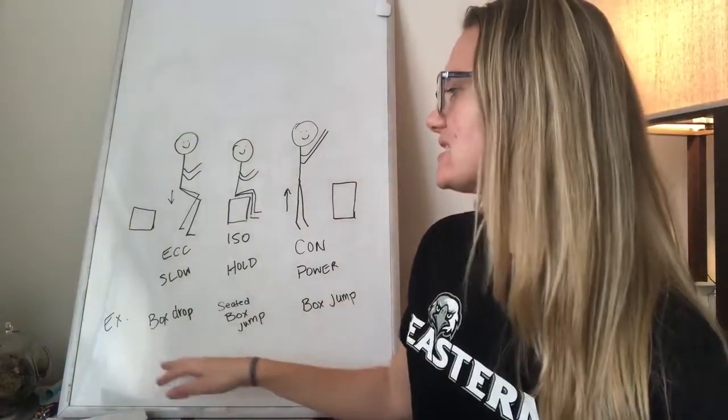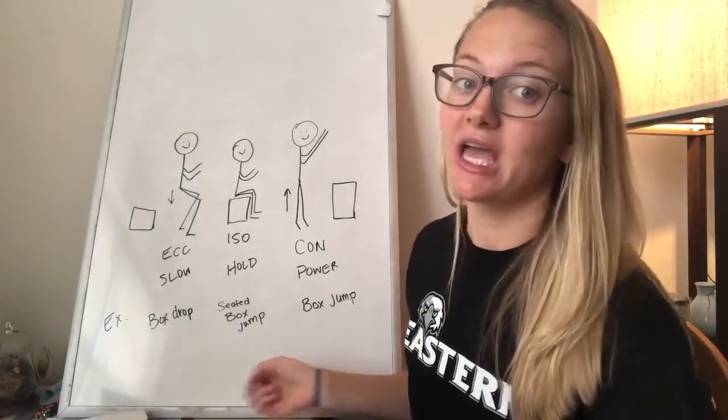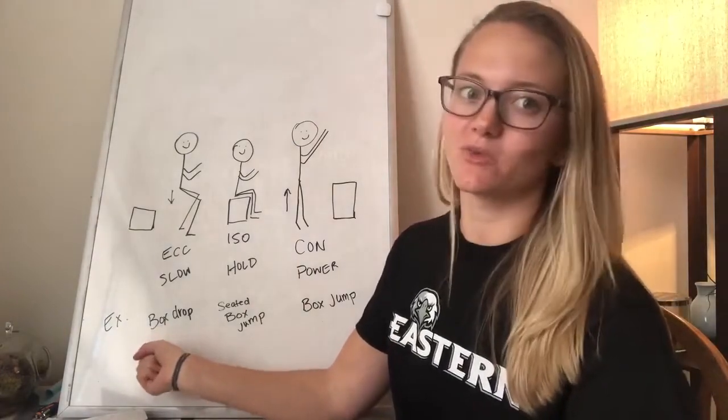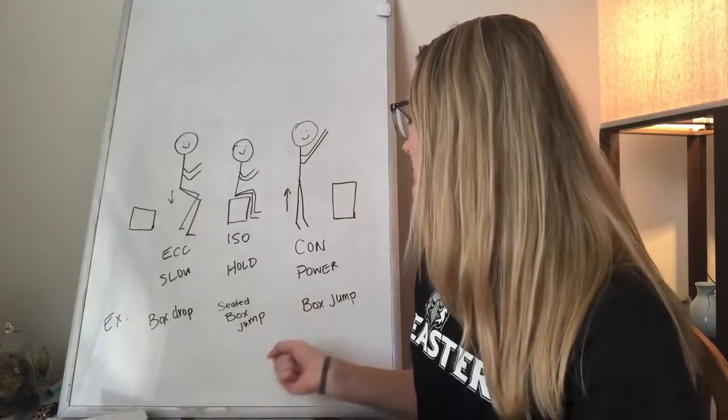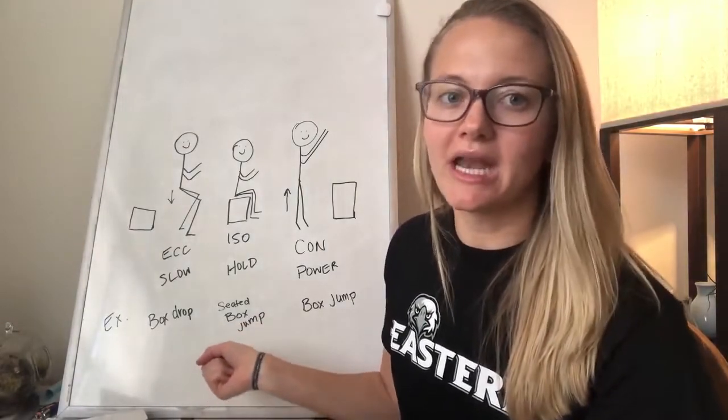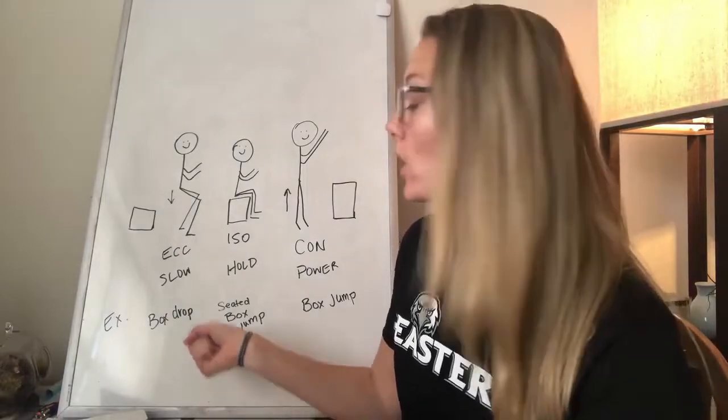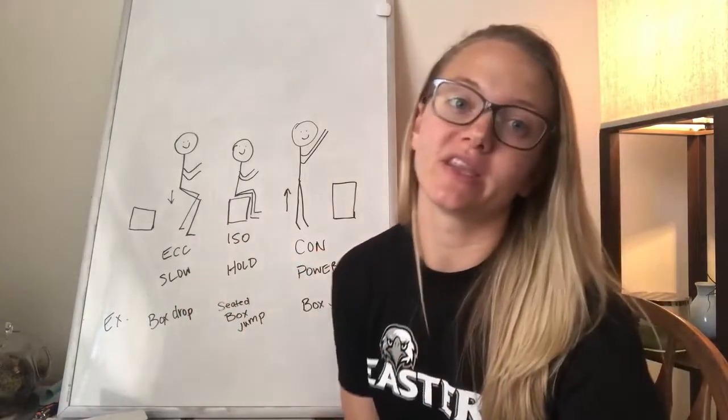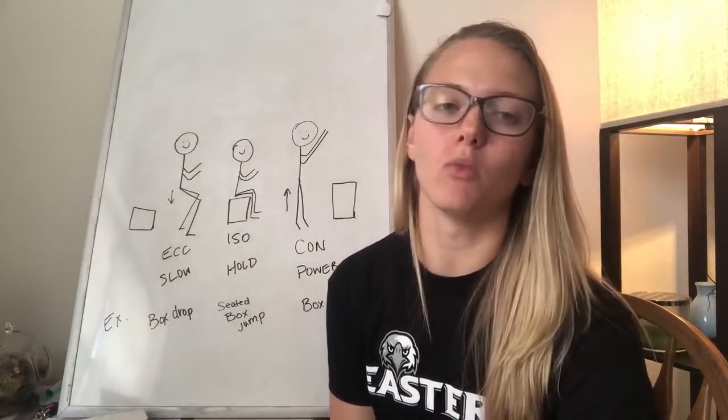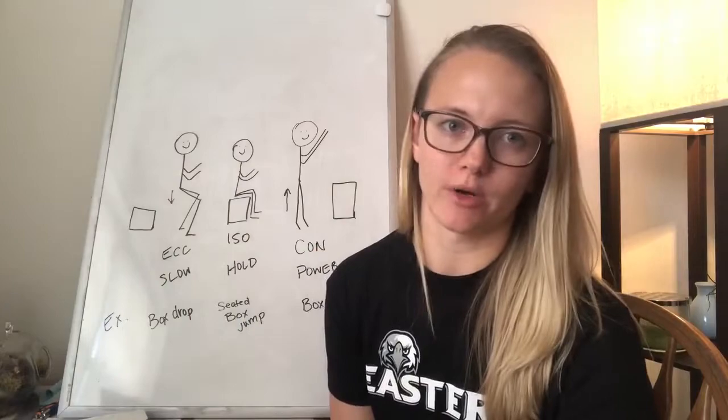So these are just the basics of a plyometric and how you can split it up to just work on the eccentric phase with a box drop, isometric phase, concentric. The other thing to think about as a track runner, 90% of the time we're not on two feet. So doing these things single leg is a huge, more specific plyometric for our sport.